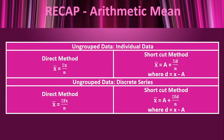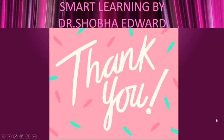For a formula recap: for individual data, x̄ = σx / n; and for discrete series, x̄ = σfx / n. If the shortcut method is specified, we use the shortcut method formula; otherwise, x̄ = σx / n for individual data and x̄ = σfx / n for discrete series. Thank you, and have happy and smart learning!